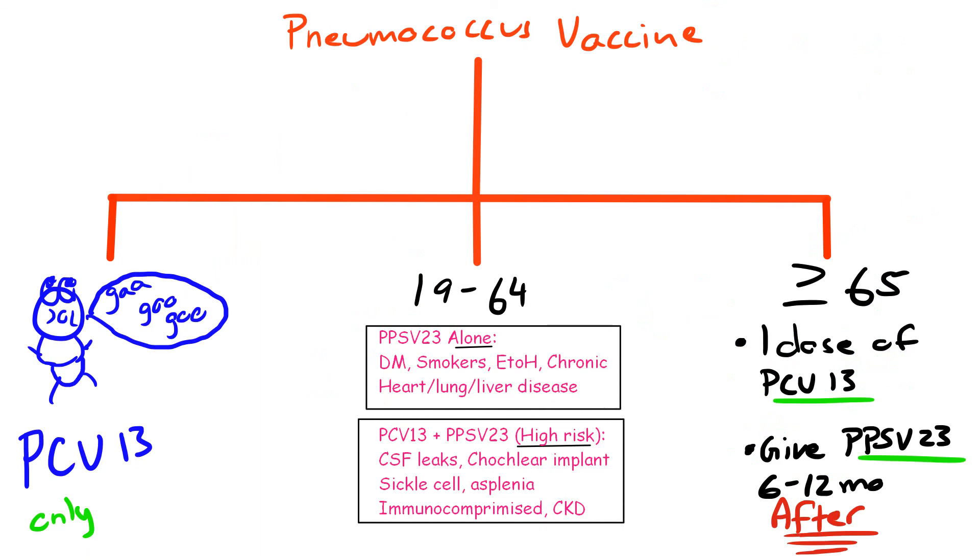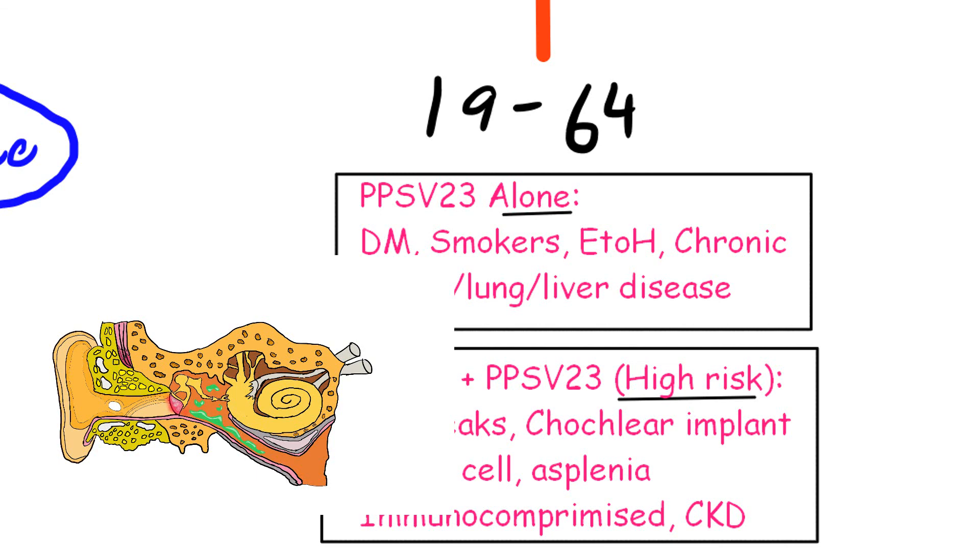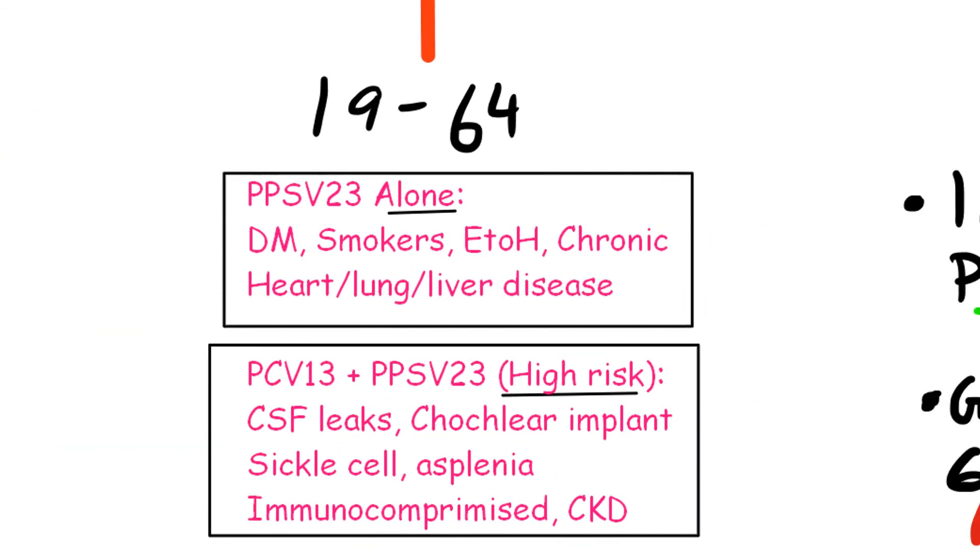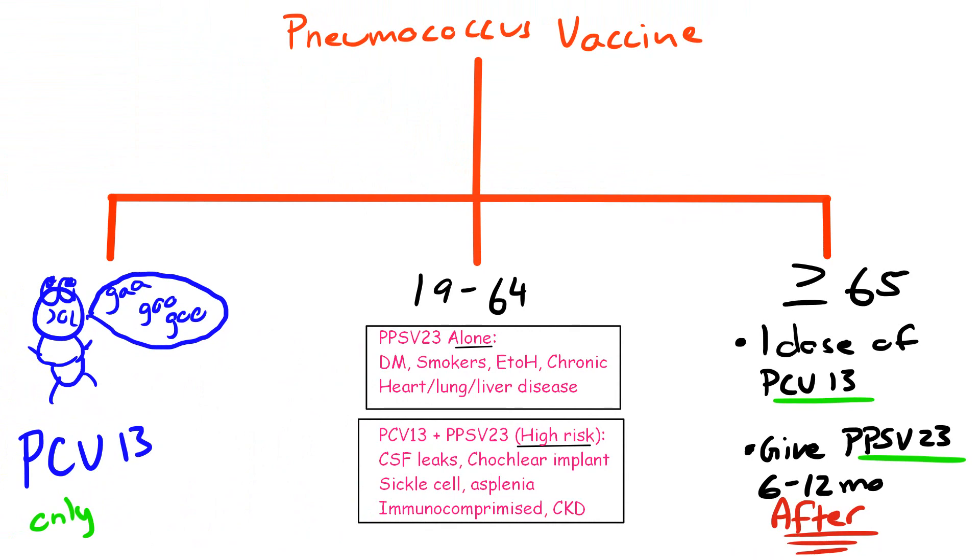So in adults especially between the ages of 19 to 64 we give the pneumococcal polysaccharide vaccine 23, aka the PPSV23. If they are diabetic, alcoholics or smokers we need to give them both if they're high risk patients like CSF leakers, sickle cell patients, patients who've had their spleen removed, immunocompromised patients like HIV, and a rare one which I've seen them test like a few times is patients with cochlear implants. Patients older than 65 get one dose of PCV13 followed by PPSV23 6 to 12 months later. So just remember they're gonna get both.